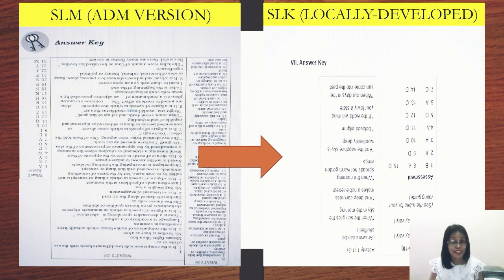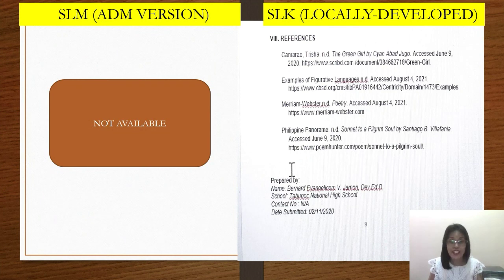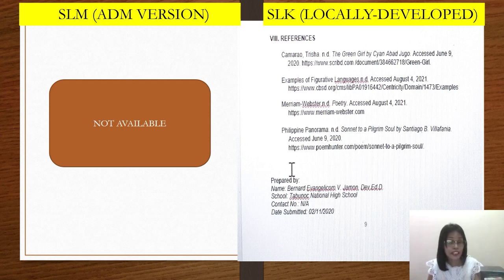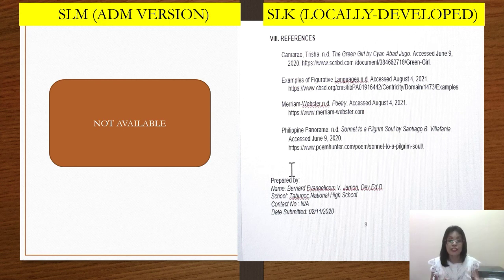Step number seven: both SLM and SLK have the same component — the answer key. So the answer key is an essential part in the making of instructional material. Similarly, references are also constant in both SLM and SLK, so there's no conversion happening there. However, there is an addition of supplementary materials that are enclosed. You can add some references if deemed necessary; if not, that's okay too — as long as all the resources and materials you use can be cited properly. That's the important thing.